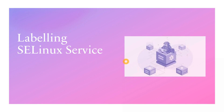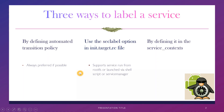Hi everyone, Dimple here again welcoming you all to today's session on Android framework components. Today we will see what are the different ways in which we can label a service. Basically there are three different types you can label a service: first one is by defining automated transition policy, second one is using a sec_label option in init.target.rc file.